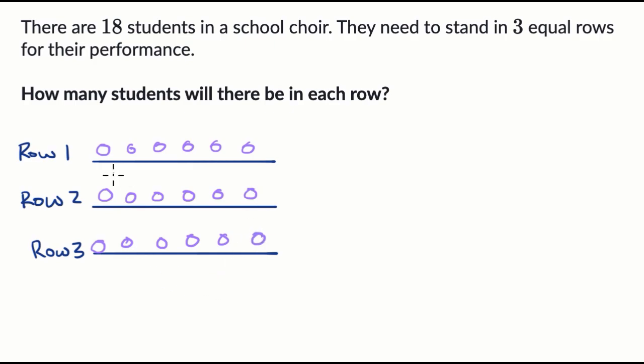All right. It looks like I got the exact same number of circles or students in each of these three rows. How many are there? It looks like one, two, three, four, five, six in each of these rows.